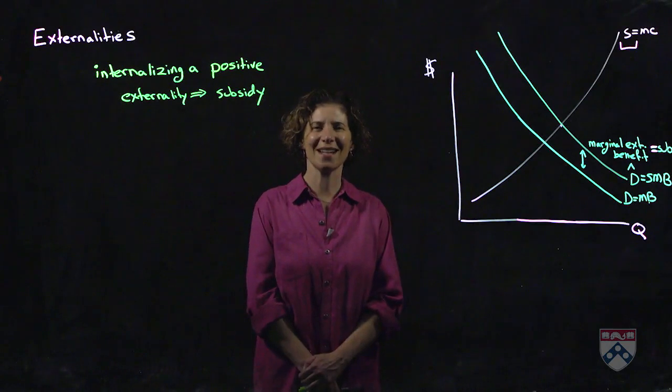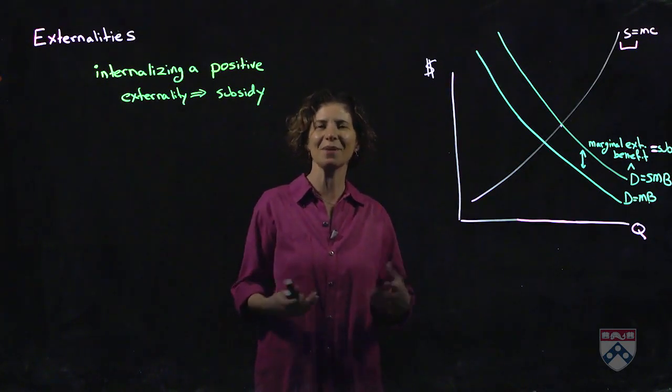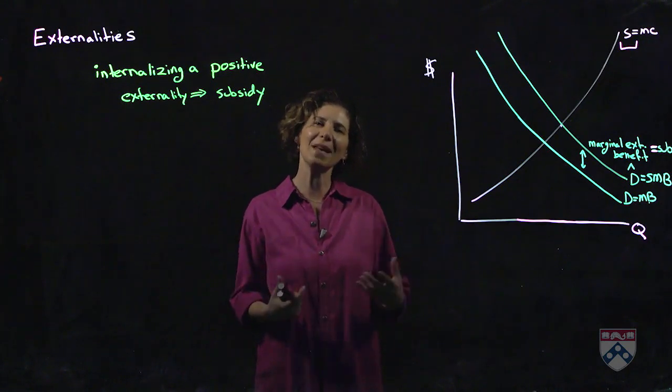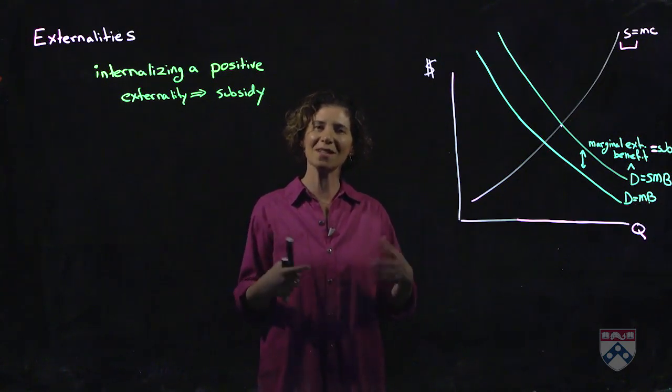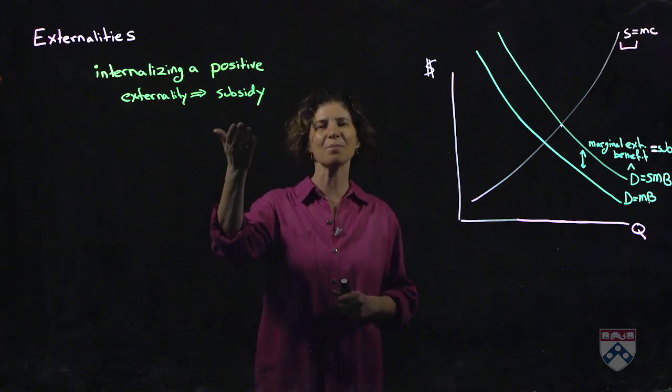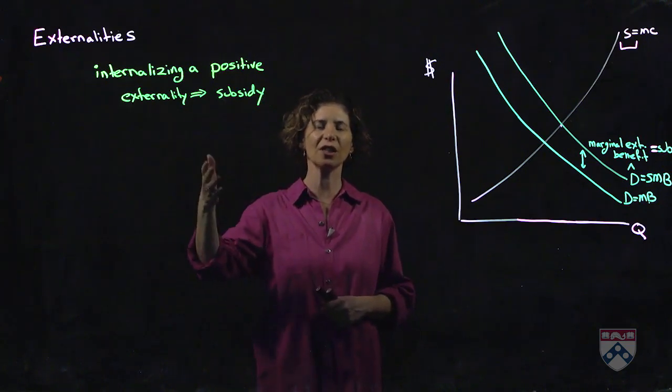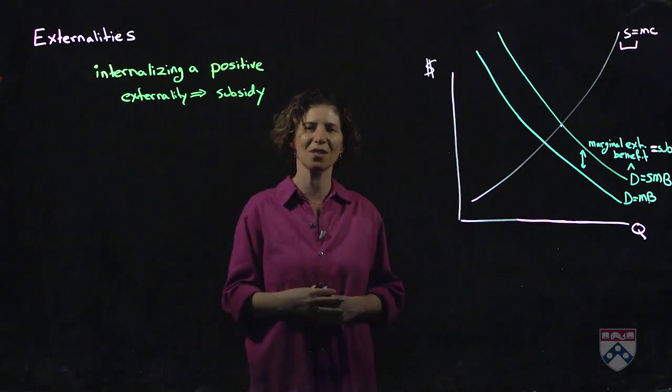In the case of a positive externality, we want the person who is getting the good, for example the vaccine, to feel the benefit that they are causing on the rest of society. So instead of setting a tax, what we can do is set a per unit subsidy. And the per unit subsidy will internalize this external benefit to society.